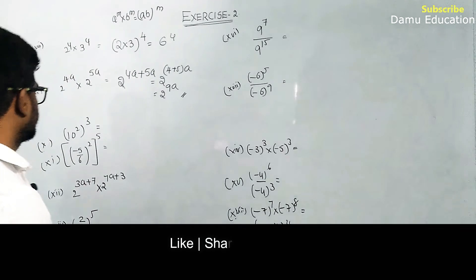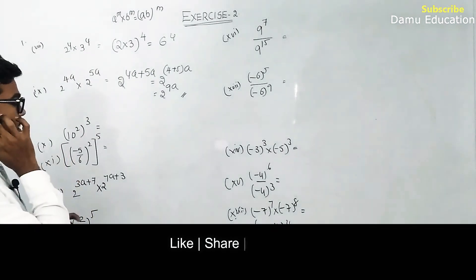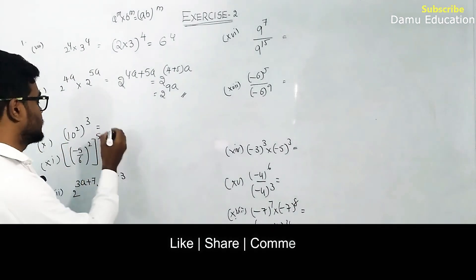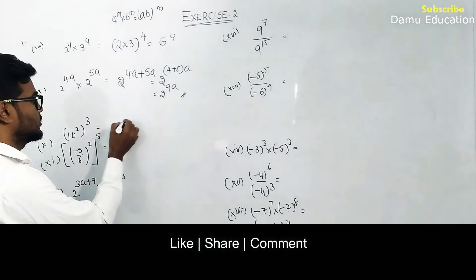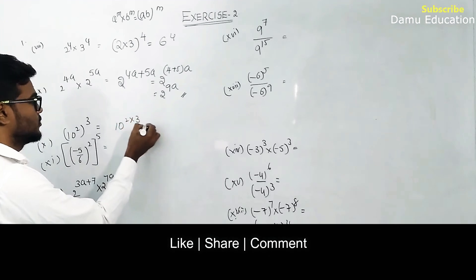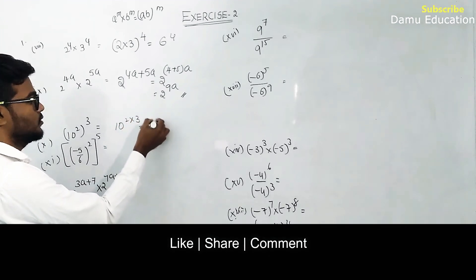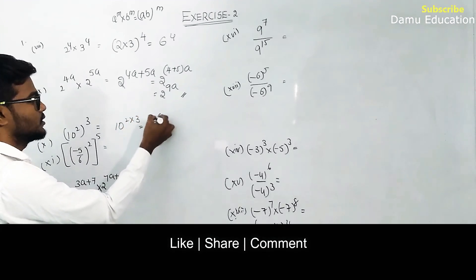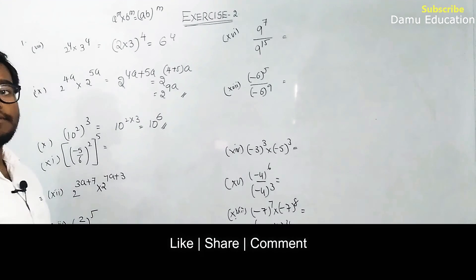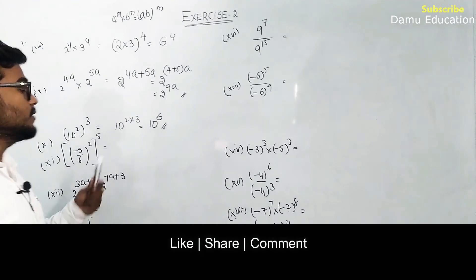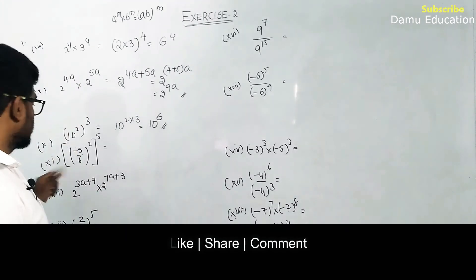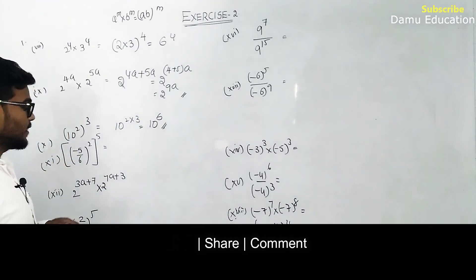Next: 10 using a power m whole power n. Formula gives 10 power 2 into 3, which equals 10 power 6. We used the a power m whole power n formula here.